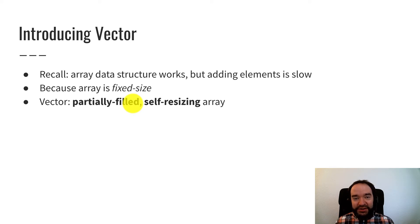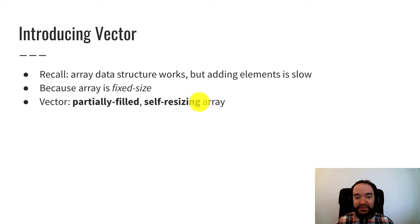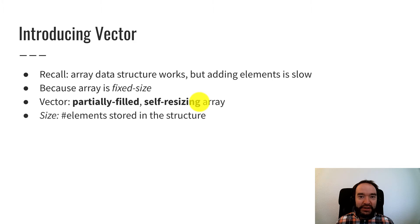We still have the issue that the array might fill up, and that's the self-resizing idea. If the array gets totally full and would overflow because we have one more element we need to stick in there, what we do is allocate a new array at that moment and copy everything over.